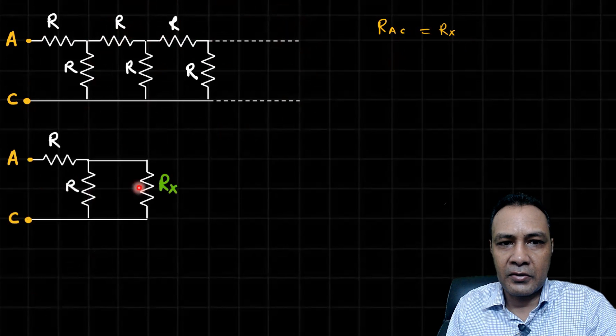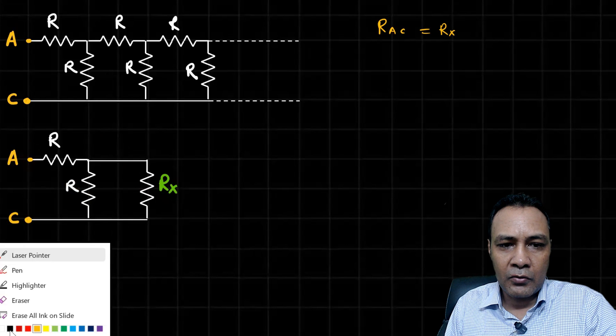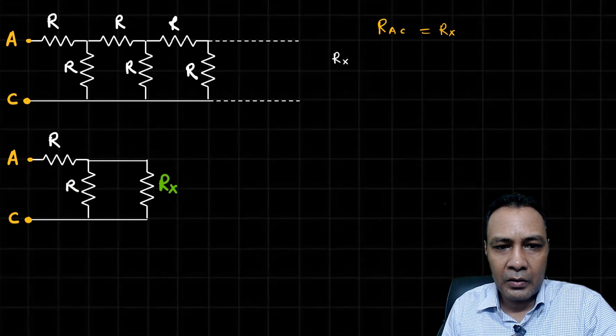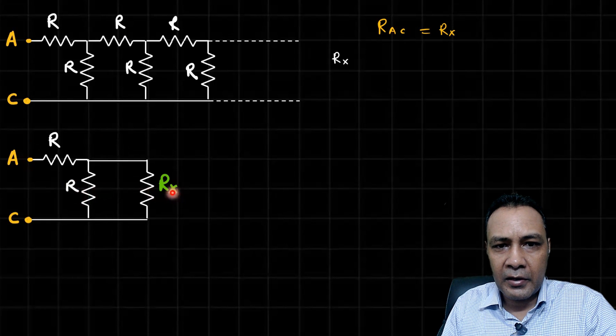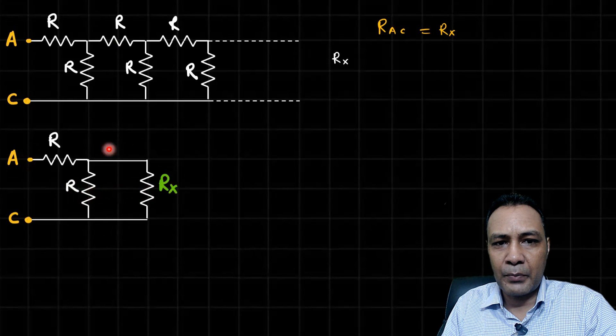In place of that whole thing I will write R_X. The equivalent is again R_X. So R_X is equal to this R and R_X, which will be R times R_X upon R plus R_X in parallel, and with the resultant there is a series resistor of resistance R.